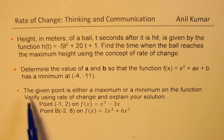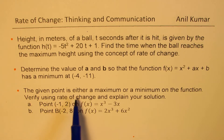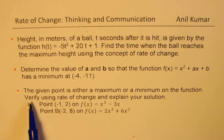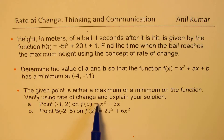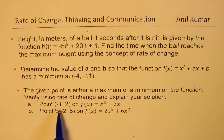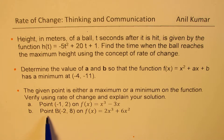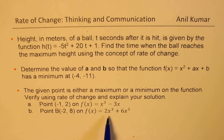The third question has two parts. It says the given point is either a maximum or a minimum on the function — verify using rate of change and explain your solution. Part A: point (minus 1, 2) on the function x cubed minus 3x. Part B: point (minus 2, 8) on f of x equals 2x cubed plus 6x squared.